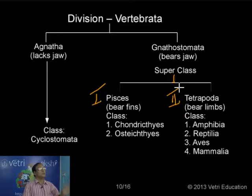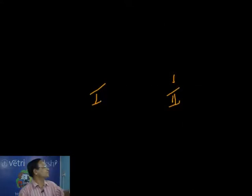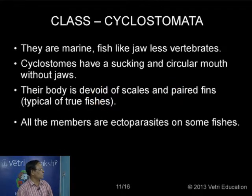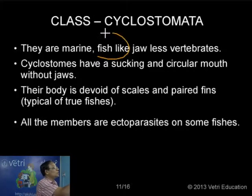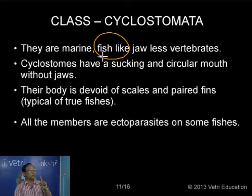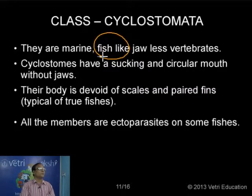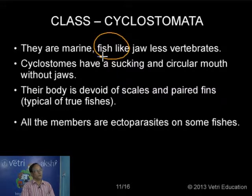Cyclostomata are all marine. They are fish-like but not considered as fishes because of the absence of two main characteristics. One: they have only unpaired fins. Two: no scales on the surface of the body. If it is a true fish, you should have paired fins such as pectoral and pelvic fins, as well as scales.